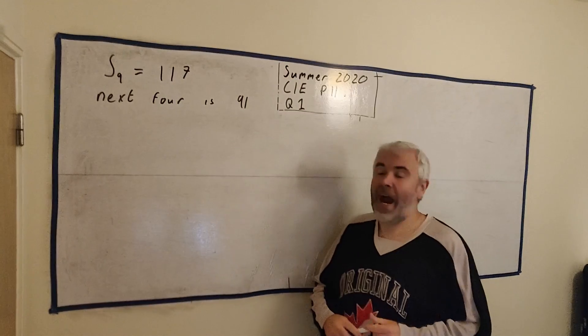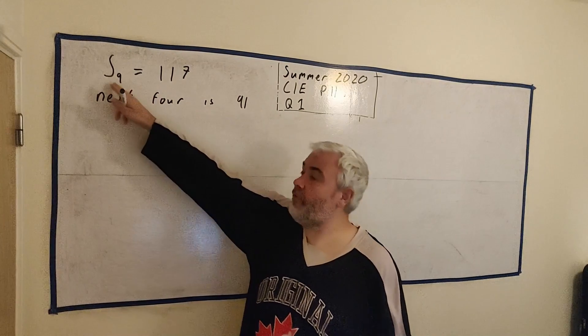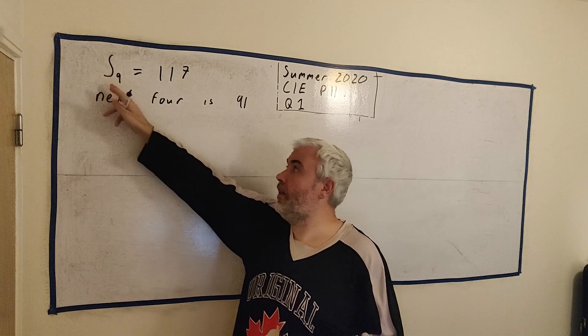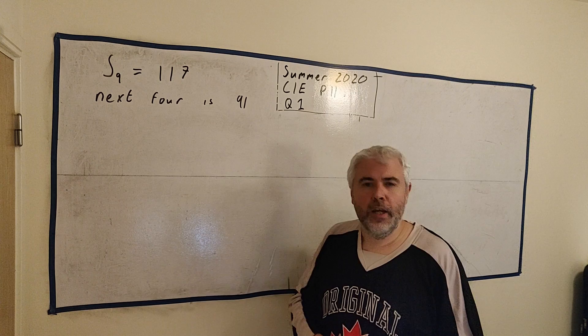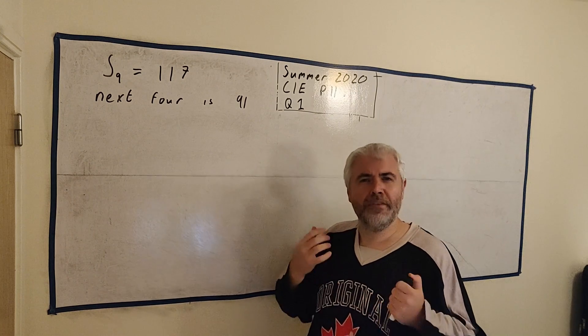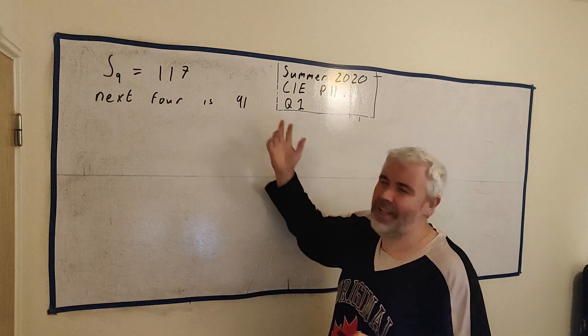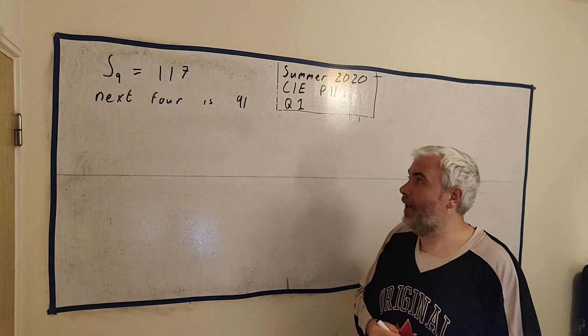The question's about an arithmetic progression. They tell us the sum of the first 9 terms, which I've written here as S₉, is equal to 117. But then they told us the sum of the next 4 terms is 91. So we need a way to turn that into maths.